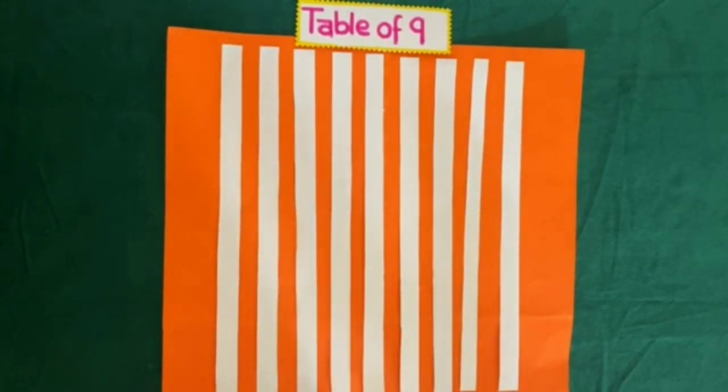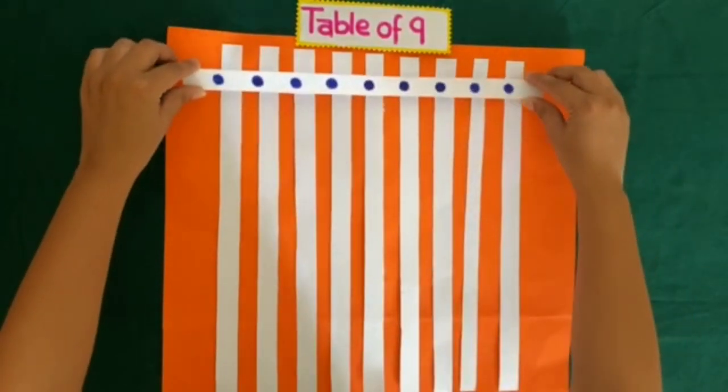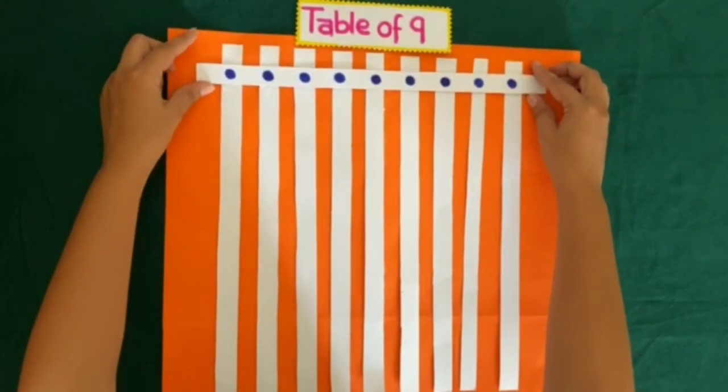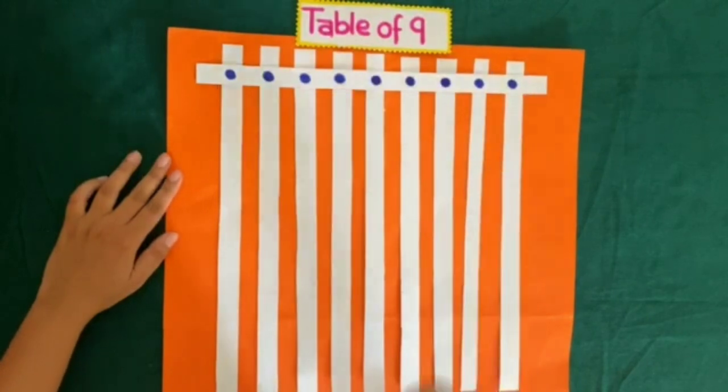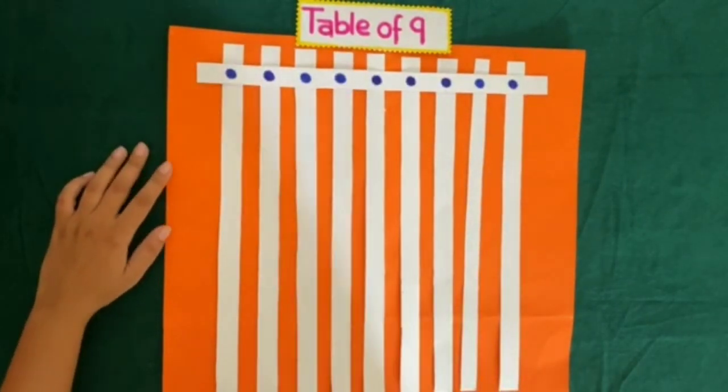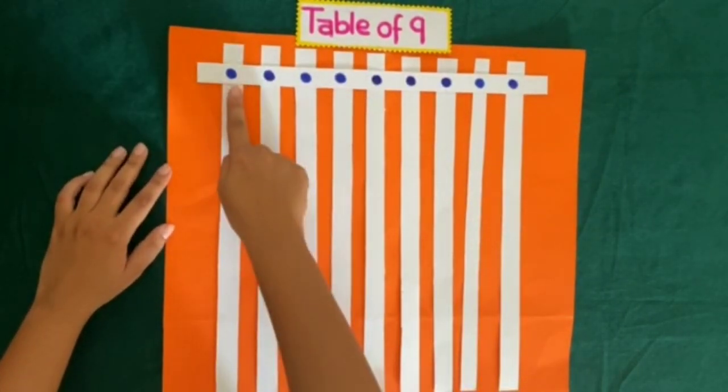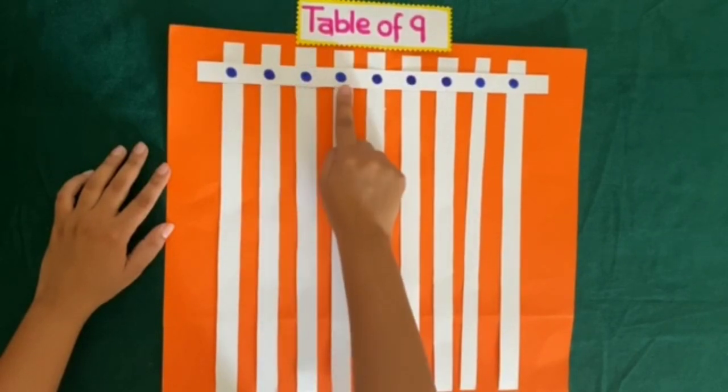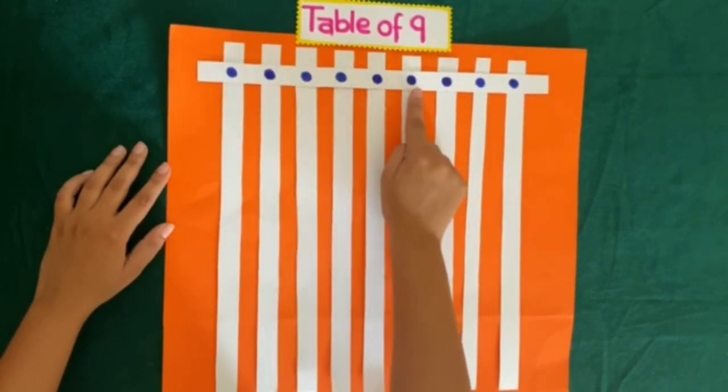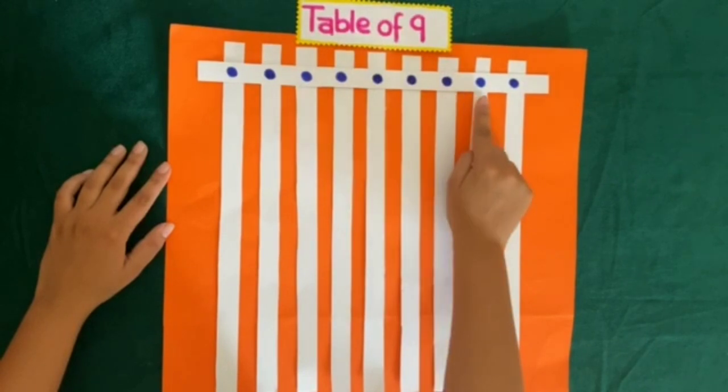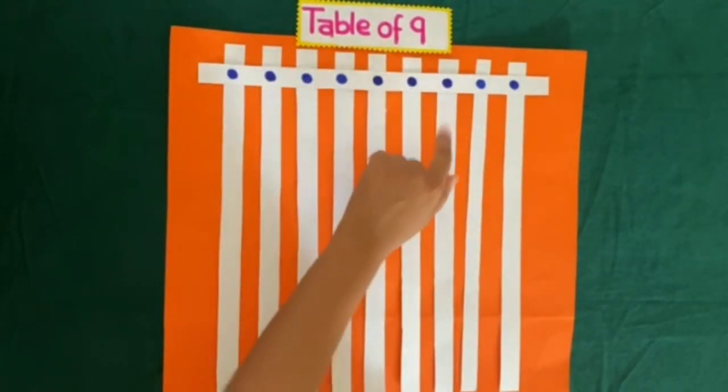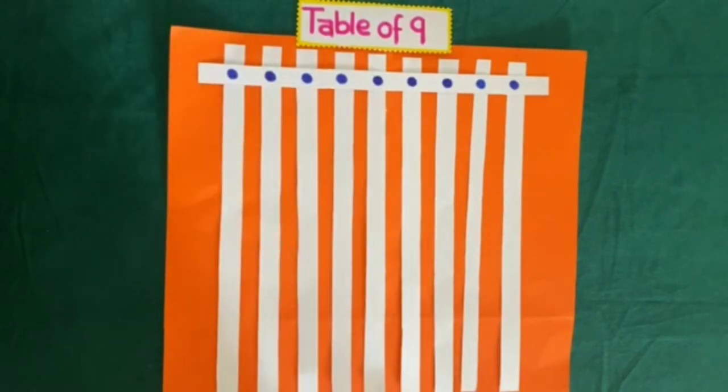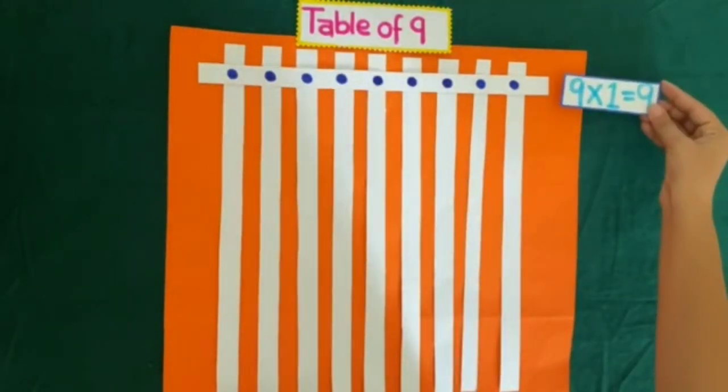Now if I place one horizontal strip over these vertical strips, then we have some intersection points. Let us count how many intersection points are there. 1, 2, 3, 4, 5, 6, 7, 8, 9. So we have 9 intersection points which means 9 ones are 9.